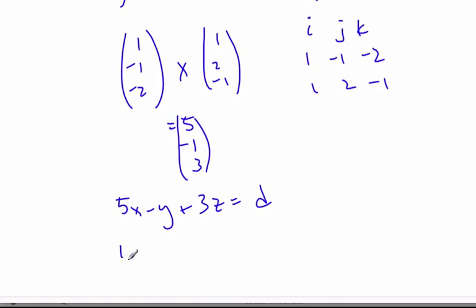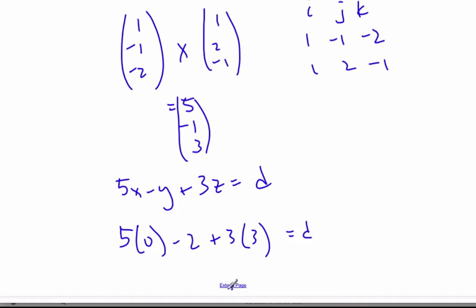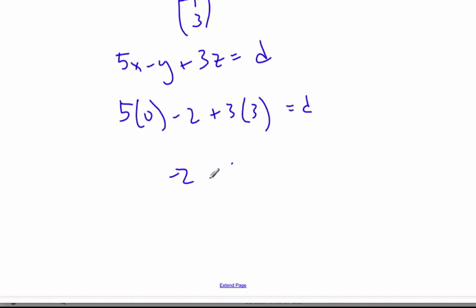I'm going to plug in 0, 2, 3. 0, 2, 3. And so I get negative 2 plus 9 equals d, and so d is equal to 7. And so the Cartesian equation, 5x minus y plus 3z equal to 7.